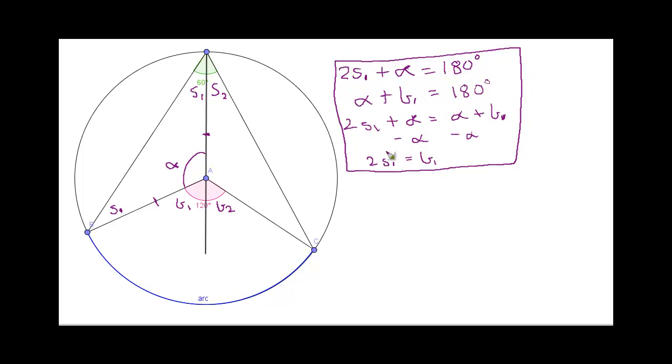Okay, now if we repeated these steps that we just did here on this triangle, for this triangle, we'll actually get a very similar equation. The equation we would get is 2S2 equals B2.